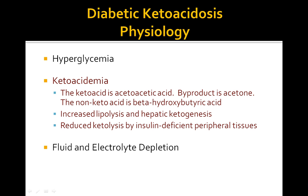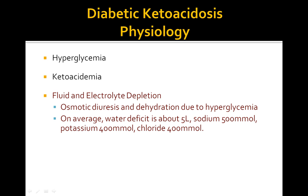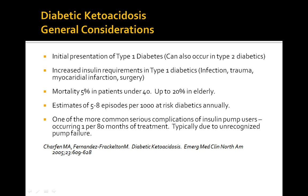The third key physiological concept in diabetic ketoacidosis is osmotic diuresis and dehydration, which are due to the hyperglycemia. On average, the water deficit is around 5 liters in a patient, sodium is around 500 millimoles, potassium is 400, and chloride is 400.